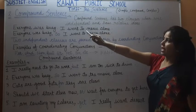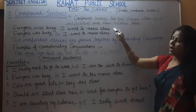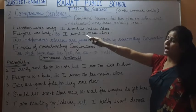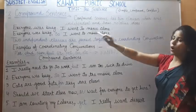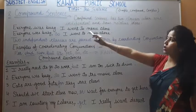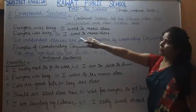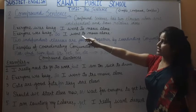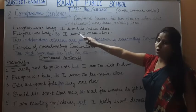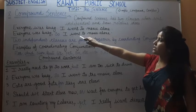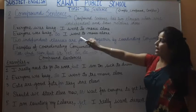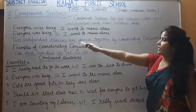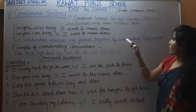Let's see the example: 'Everyone was busy, so I went to the movie alone.' There are two clauses and both are independent. With the help of 'so' — a coordinating conjunction — we can join both clauses. Both are independent clauses joined by the coordinating conjunction 'so'.